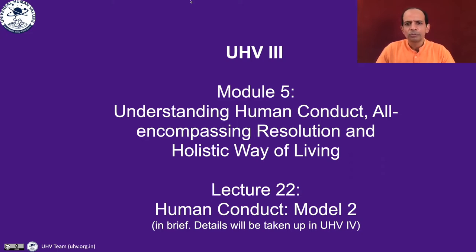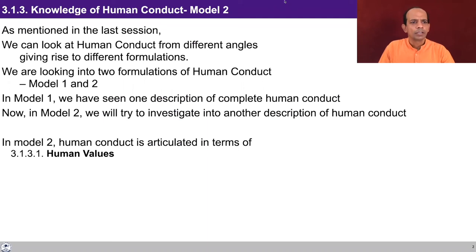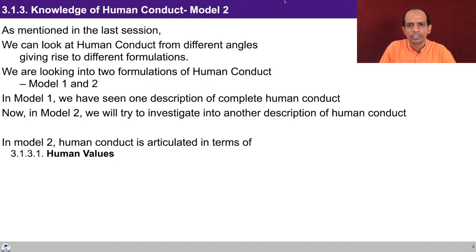We are going to discuss this model only in brief; the details will be covered in the next course, UHV4. As mentioned in the last session, we can look at human conduct from different angles. Human conduct is basically the expression of right understanding, right feeling, and right thought in our behavior, work, and interaction with the whole of nature. We are looking at two formulations: Model 1 and Model 2.